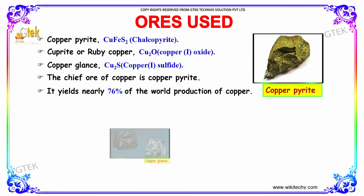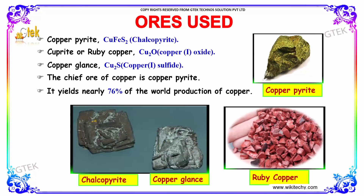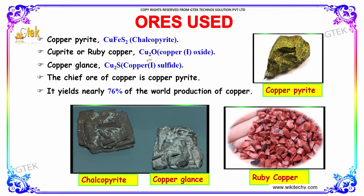The Ores. Copper can be obtained as ores from copper pyrite, also called chalcopyrite. And cuprite, copper oxide, or ruby copper.